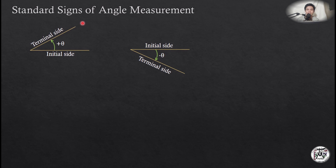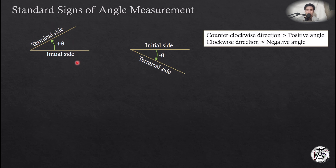We have the standard signs of angle measurements. We illustrate like this: we have the initial and terminal sides. Take note that another term for the initial side is the reference side. In this illustration, we have the counter-clockwise direction — a counter-clockwise angle is a positive angle.